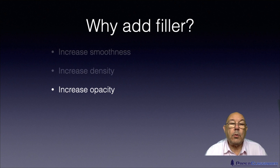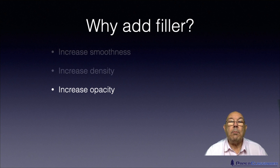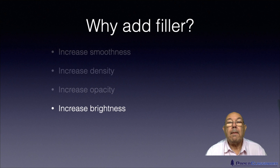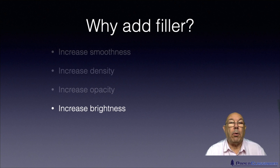And of course we use fillers to increase the opacity of the sheet. Most fillers have quite a high refractive index and that helps to improve opacity, which means you're more likely to be able to print on both sides of the sheet without it showing through. We also add fillers to increase the brightness of the sheet, because generally all fillers are actually brighter than fibres, so any addition of filler just makes it brighter and brighter.